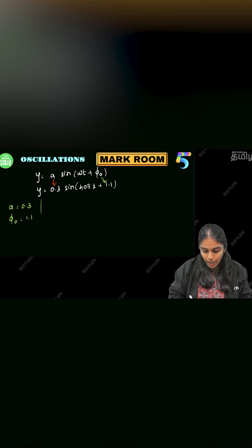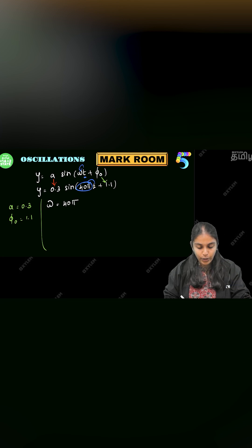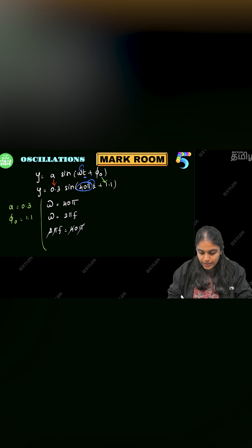The initial phase φ₀ is 1.1. Now the first parameter is omega. So ω is equal to 40π, and this is the angular frequency. Coming to the frequency, using ω = 2πf, we equate: 2πf = 40π. Pi gets cancelled, therefore frequency is 20 hertz.